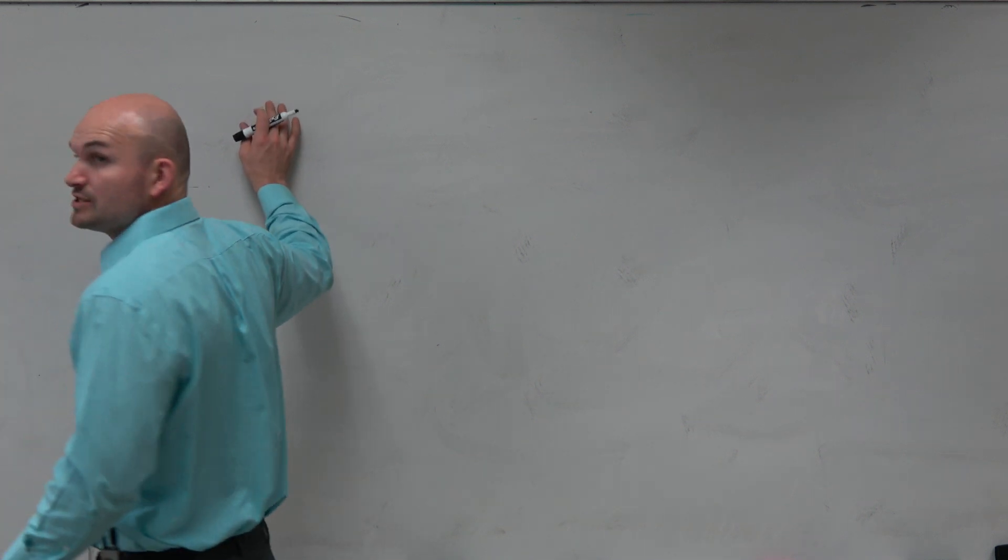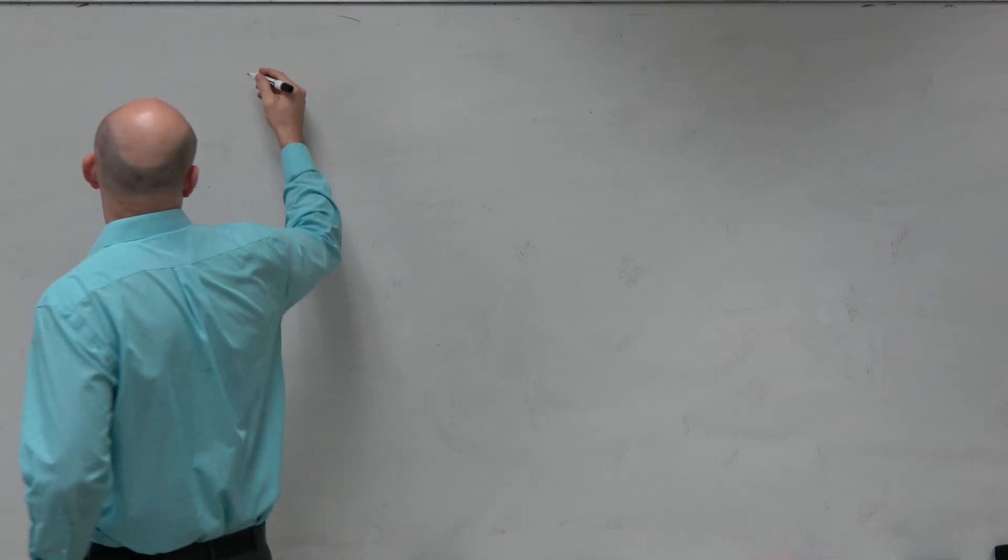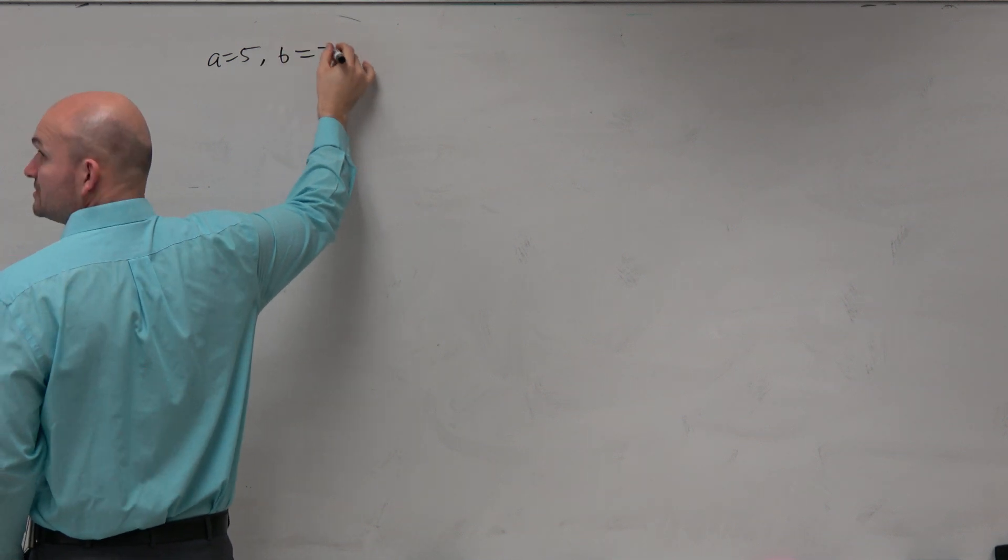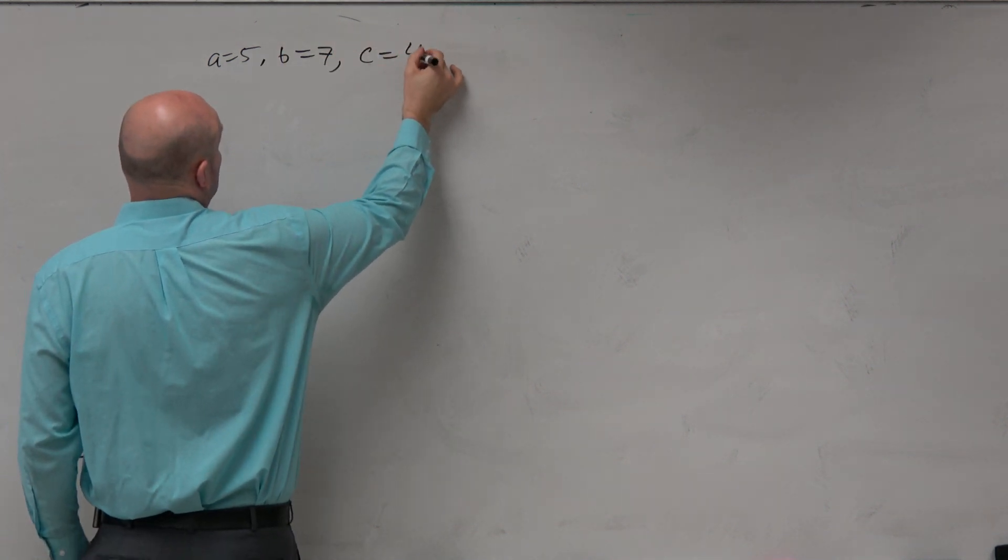Right? I mean, I could say solve by law of sines, solve by law of cosines. But in general, on a quiz or a test, you're basically going to be given A equals 5, B equals 7, and C equals 42.